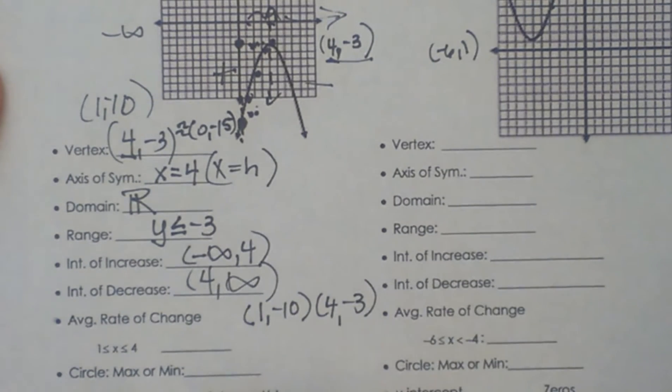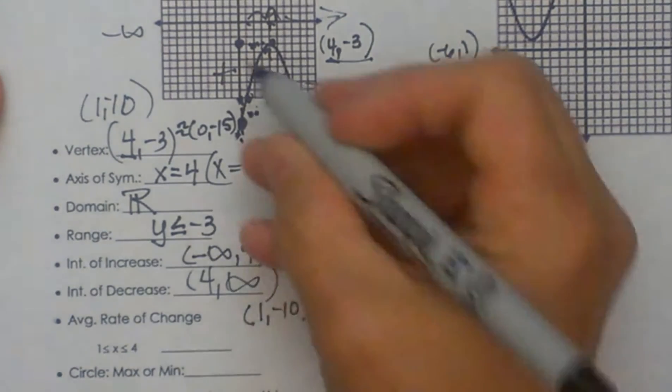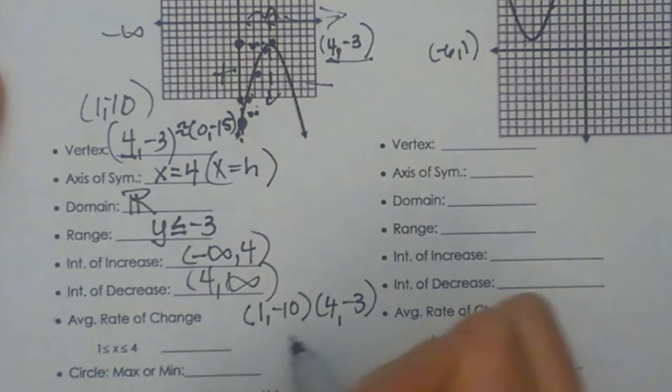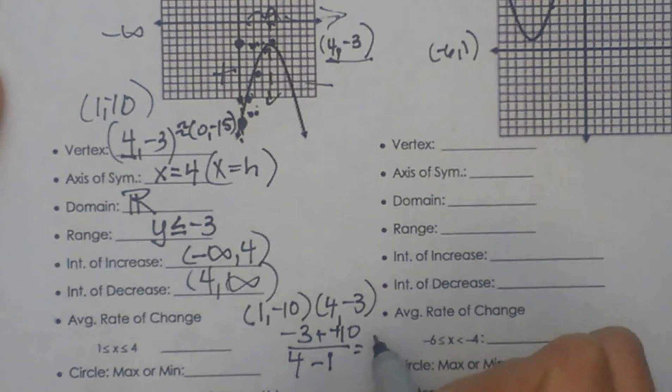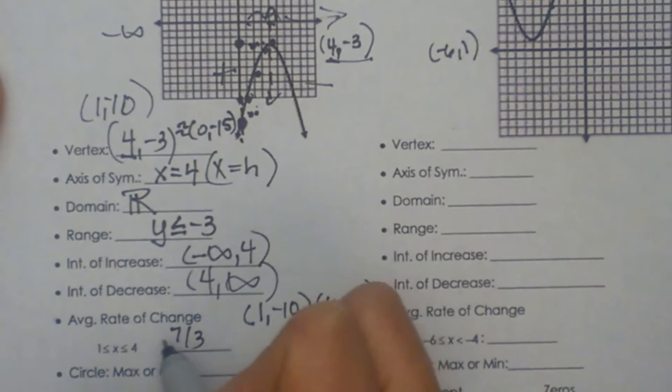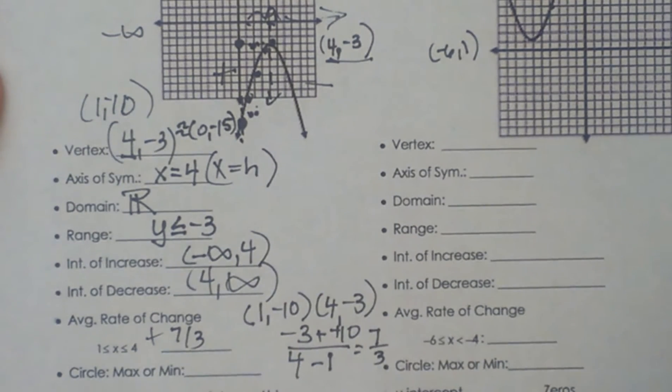What is the slope of that line? Well let's see. It is going up so it is positive. So I am going to have a negative 3 minus a negative 10 y2 minus y1 over x2 which is 4 minus 1. So that is going to give me 7 over 3. So 7 thirds. And it is positive because it is going up.